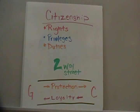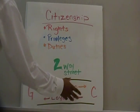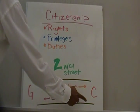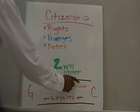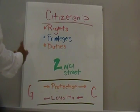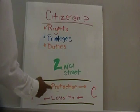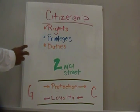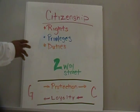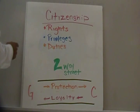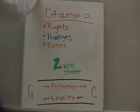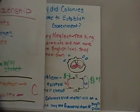Citizenship is a two-way street. Look at the illustration — it's supposed to be a street. Citizens give their loyalty to the government, and in return, the government gives them protection. The government must protect the citizens, and if citizens feel protected, they should have no problem giving their loyalty so they can have rights, privileges, and duties. We'll go more deeply into rights, privileges, and duties in tomorrow's class. Today, we looked at the protections a government gives. Remember: government gives protection, citizens give loyalty.